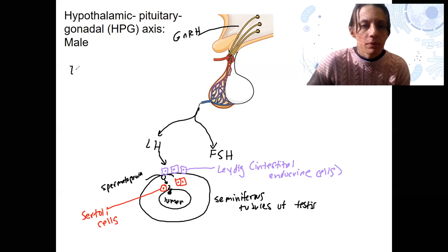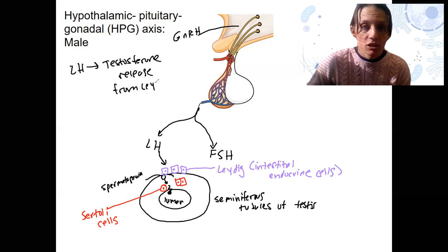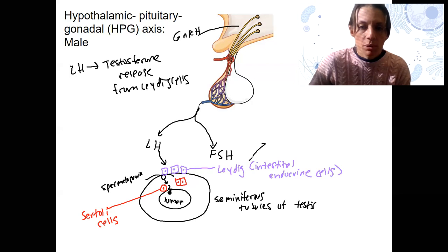So luteinizing hormone is going to trigger testosterone release from those Leydig cells, because those are endocrine cells, right? Let's just say these are going to produce testosterone. And that is stimulated by luteinizing hormone.